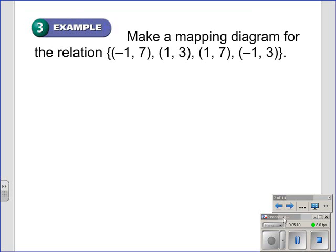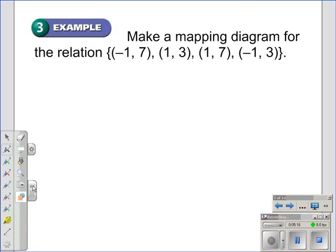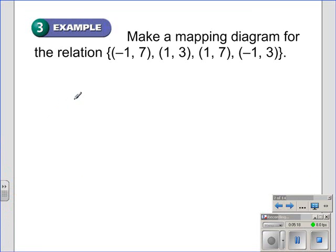Example three, make a mapping diagram for the relation. It's a pretty easy thing to do. Everyone does it a little bit differently, or every textbook really deals with it a little bit differently. But they all do something like this. First, we make two columns.